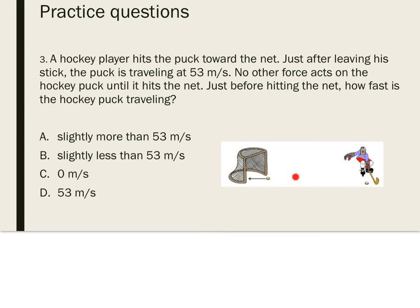Number three: a hockey player hits the puck towards the net. Just after leaving his stick, the puck is traveling at 53 meters per second. No other force acts on the hockey puck until it hits the net. Just before hitting the net, how fast is the hockey puck traveling? From the time the puck leaves the player's stick to the time it hits the net, no other force is acting on it — nothing to slow it down, speed it up, or change its direction. So it will still be moving at 53 meters per second when it hits the net.